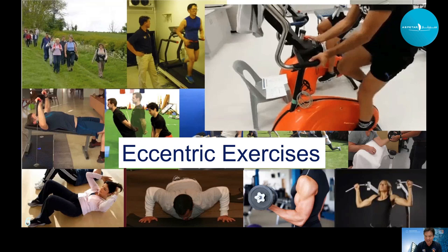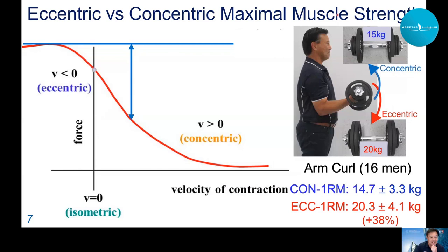There are some key characteristics of eccentric exercise. Looking at the typical force-velocity relationship, compared to isometric maximum force, eccentric contraction can produce more force than isometric, and much greater than concentric. For example, for elbow flexor curl, the average concentric is about 15 kilograms, and for eccentric about 20 kilograms — 38% greater strength during eccentric compared to concentric.